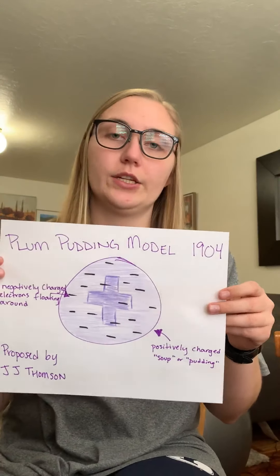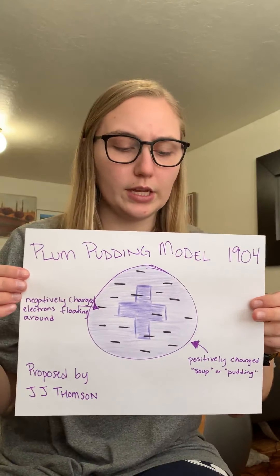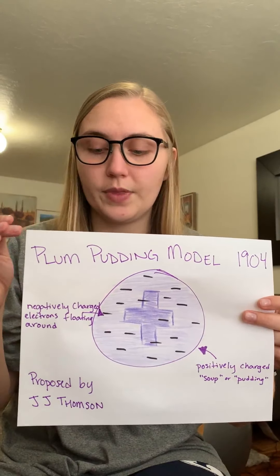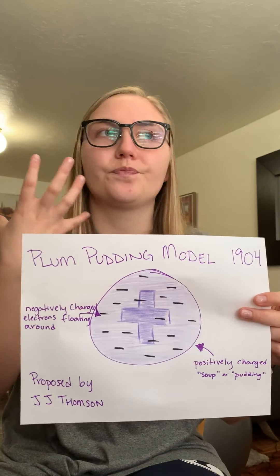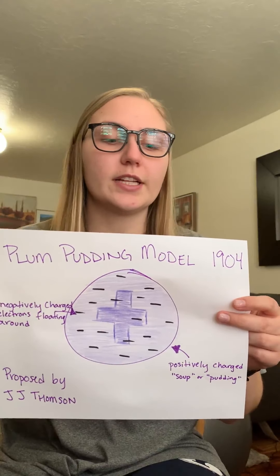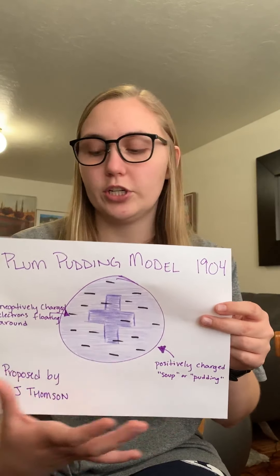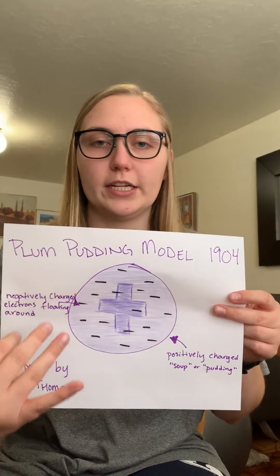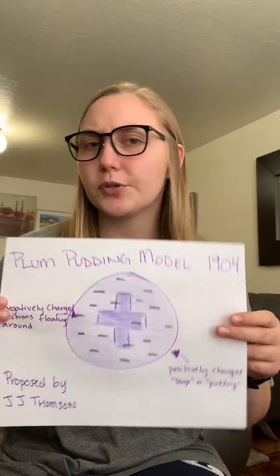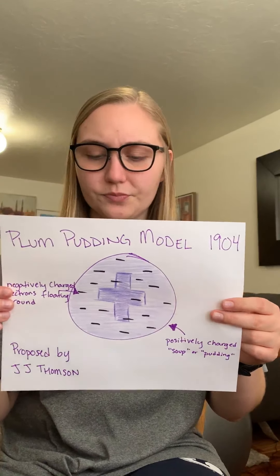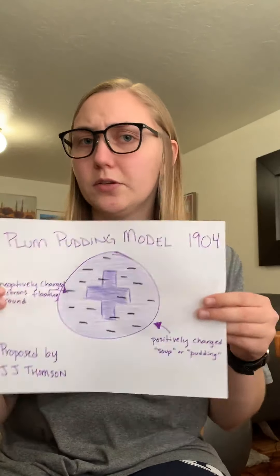To start, we need to step back from both of them to JJ Thompson. JJ Thompson proposed the plum pudding model in 1904. In this model, he had the idea that there were negatively charged electrons he had found a couple years prior, just floating around in a cloud of positive charge. That's why it's called the plum pudding — a bowl of pudding representing positive charge with negatively charged electrons placed inside it, like plums or raisins in a bready pudding. He proposed this because with the knowledge he had, it was a good idea.